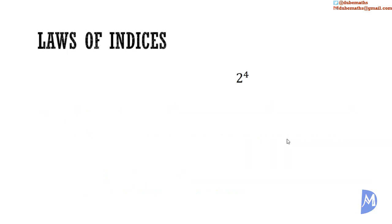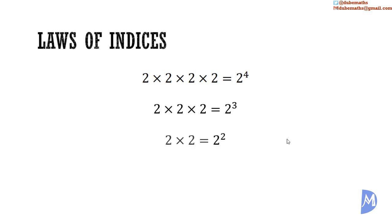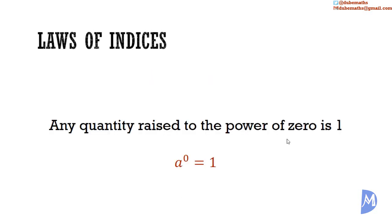You know that 2 to the 4th power is 2 written 4 times being multiplied. 2 to the 3rd power is 2 multiplied by 2 multiplied by 2. 2 to the 2nd power is 2 multiplied by 2. 2 to the 1st power is just 2. And 2 to the 0th power is equal to 1. Any quantity raised to the power of 0 is 1.